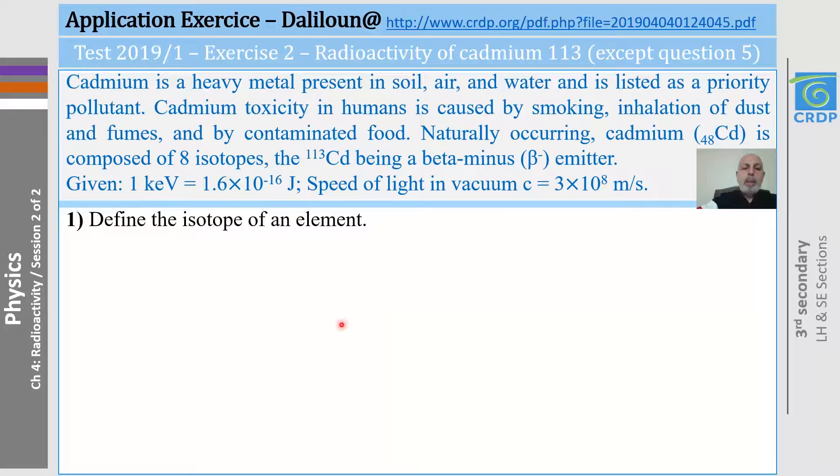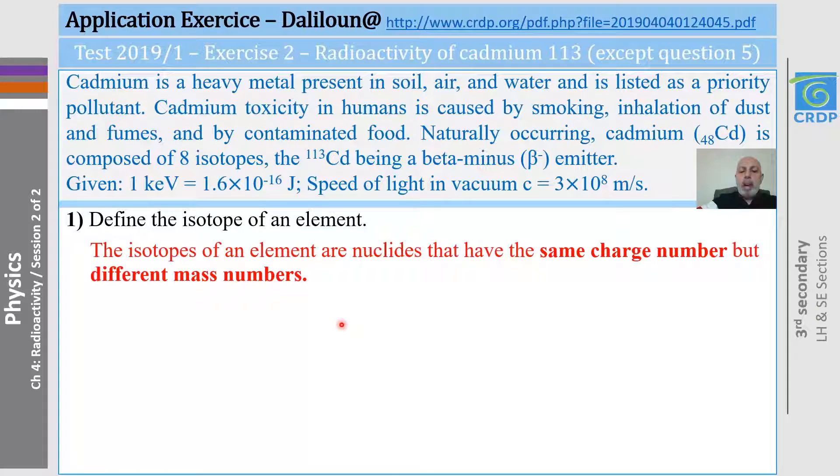Now, the first question is, define the isotope of an element. The isotopes of an element are nuclides that have the same charge number but different mass numbers.